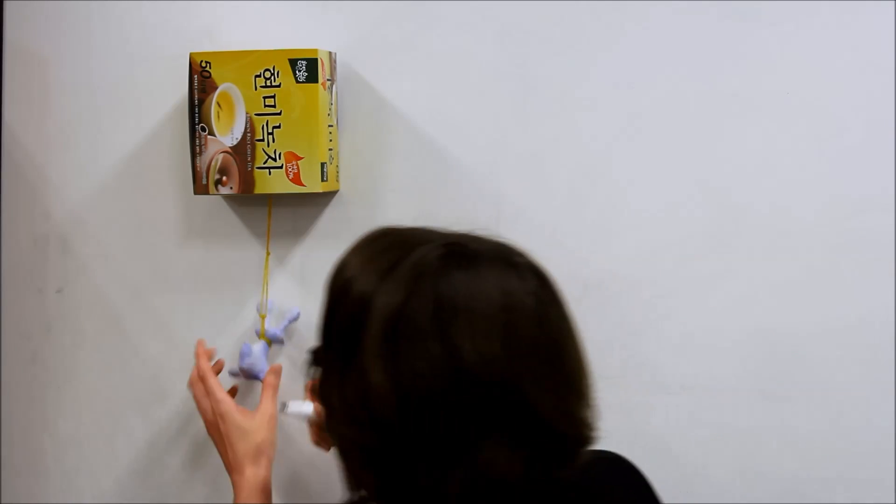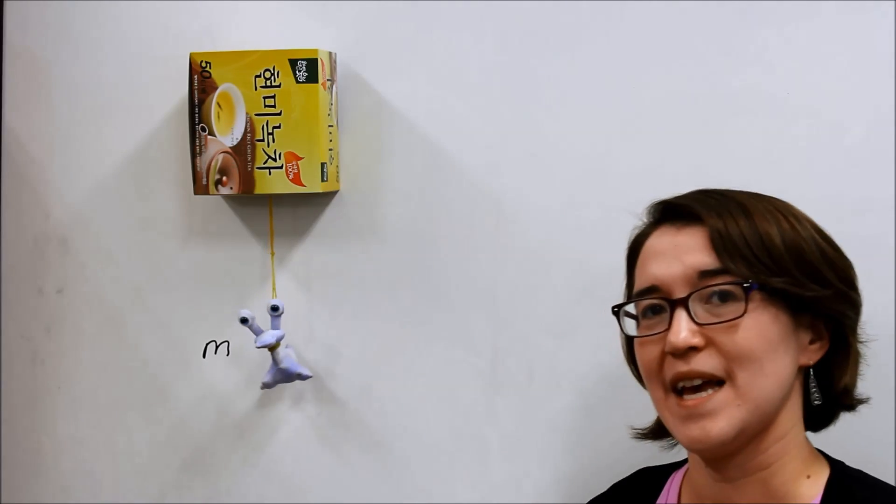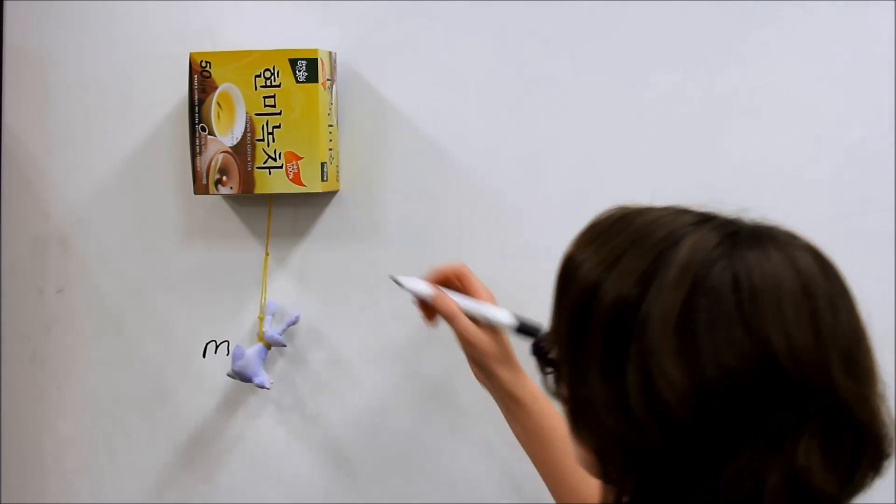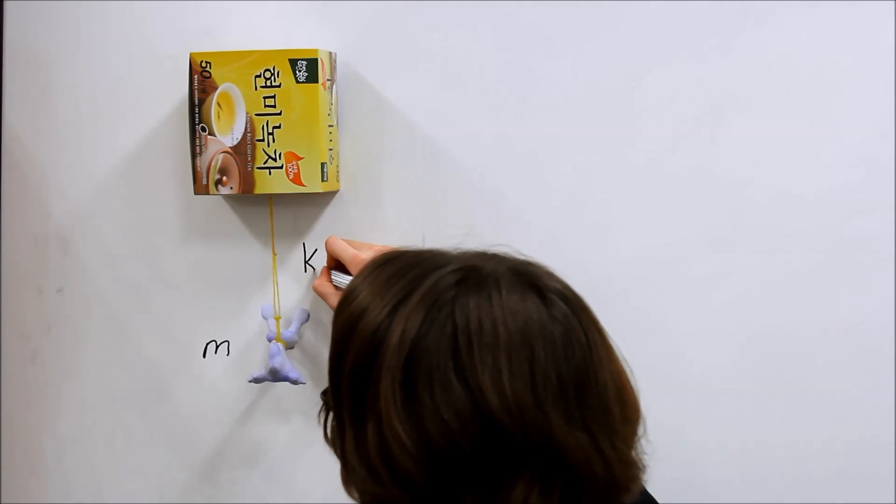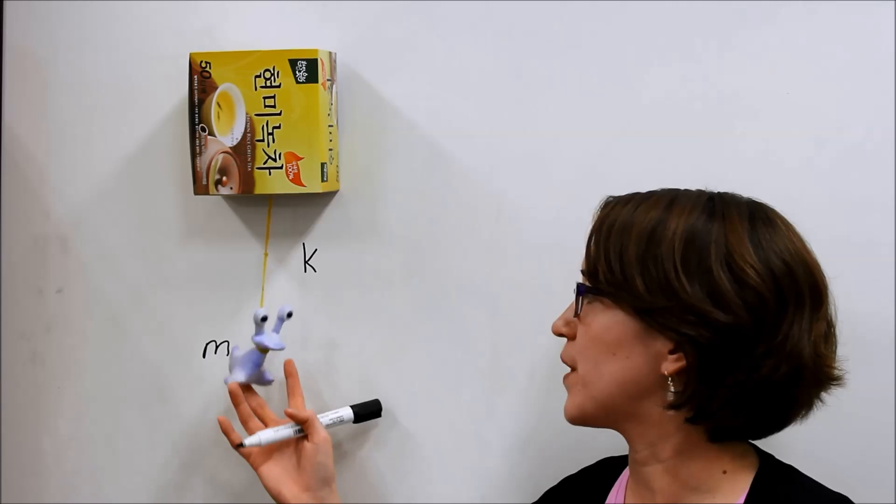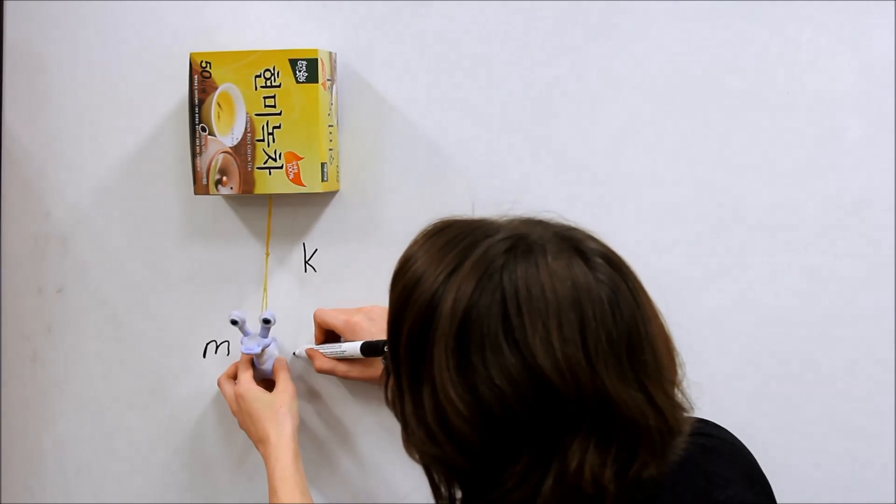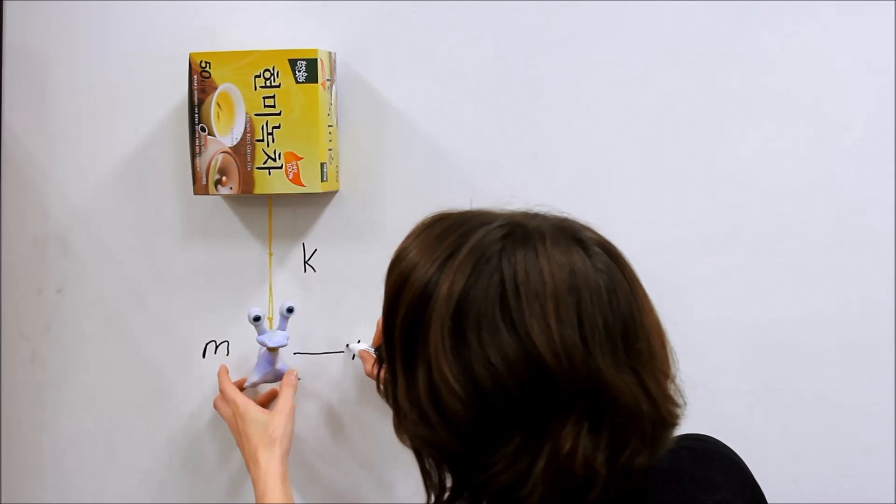So, Valerie has a mass. We'll call it m. And we have a spring. The spring has a constant, a spring constant of k. And what we care about, our outputted system, will be the position of Valerie. So, we'll say that we'll define x of t here.